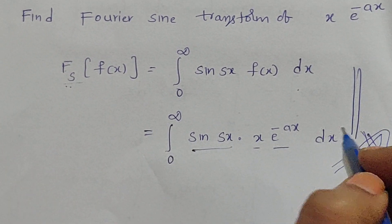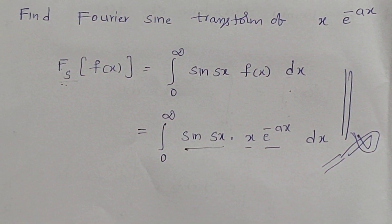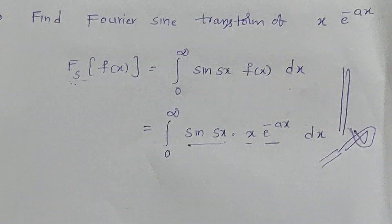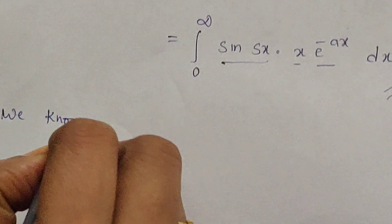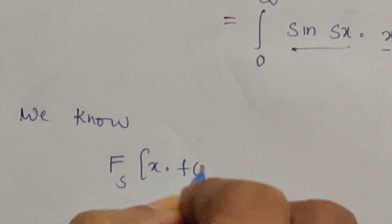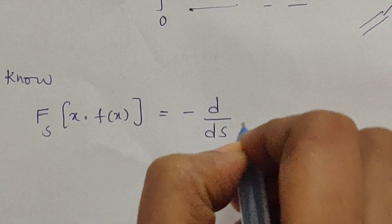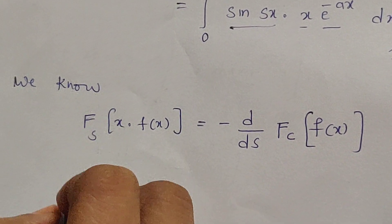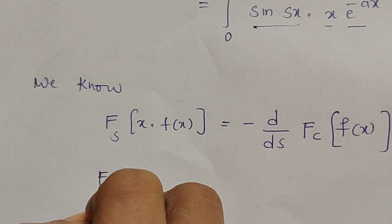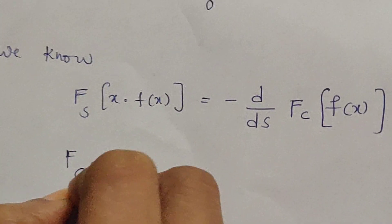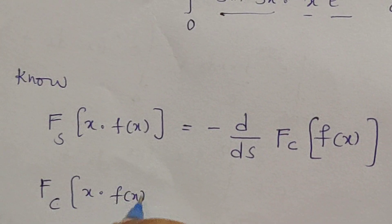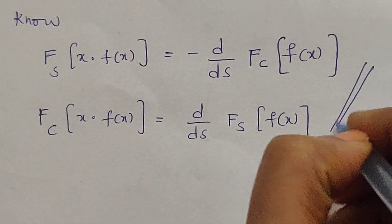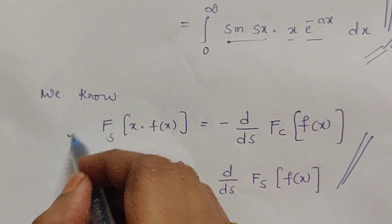Is there any other technique to find the Fourier sine transform of x·e^(-ax)? From the properties we have the formula: Fourier sine transform of x·f(x) = −d/ds of the Fourier cosine transform of f(x). We also have: Fourier cosine transform of x·f(x) = d/ds of the Fourier sine transform of f(x). These two properties were proved earlier after the modulation property.